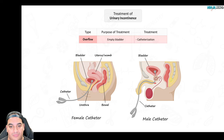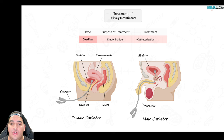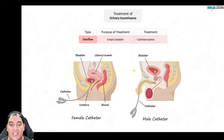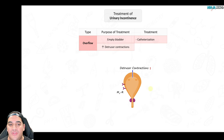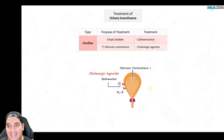For overflow incontinence, the first priority is eliminating retained urine. With a post-void residual greater than 400–500 mL, insert a catheter — either intermittent catheterization or a Foley catheter — to drain the bladder, reducing risk of urinary tract obstruction, post-renal AKI, and infections. Then address the underlying cause: if due to anticholinergic or sympathomimetic medications, discontinue them. Cholinergic agonists like bethanacol can activate M3 receptors to induce contractions, but primarily for neurological causes.